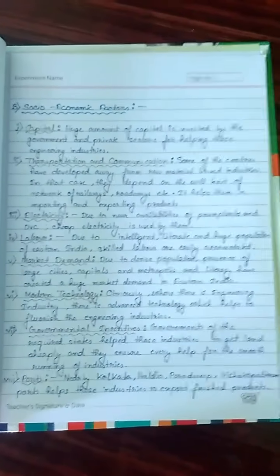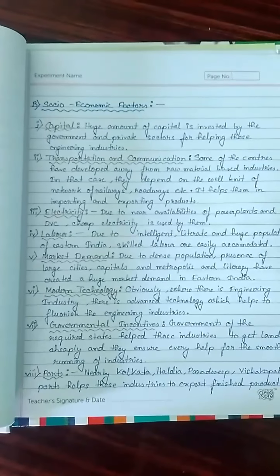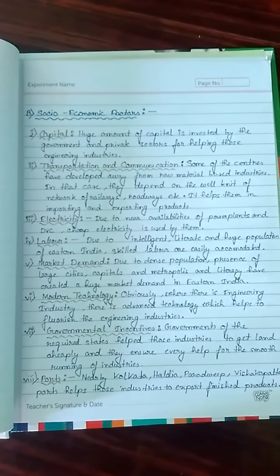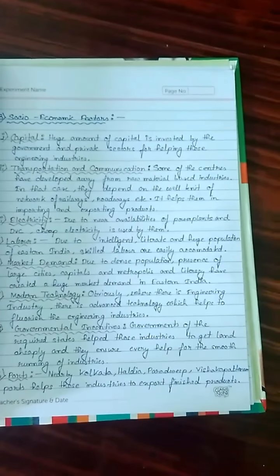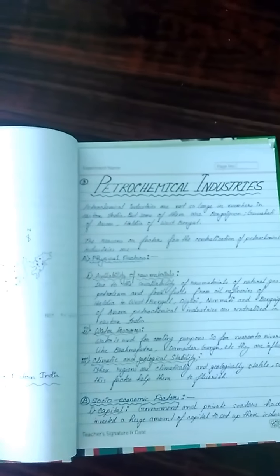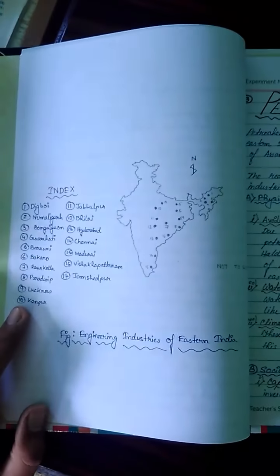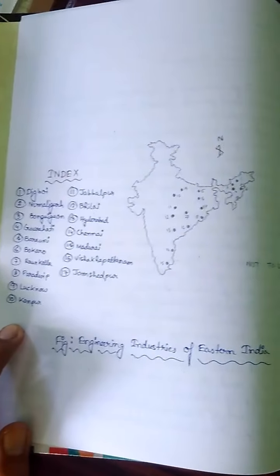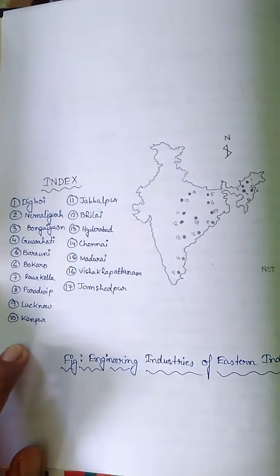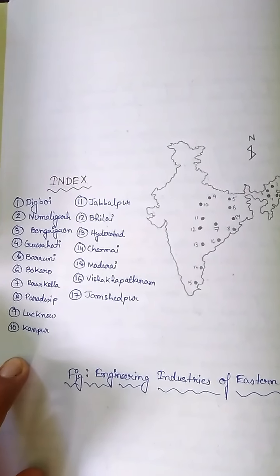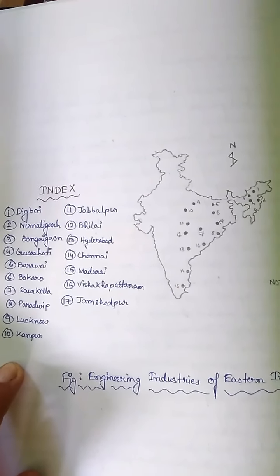Here are the socio-economic factors for the engineering industry. A map shows where engineering industries have centralized in Eastern India — there are 17 of them.